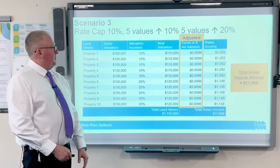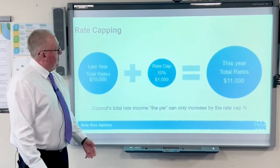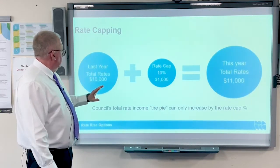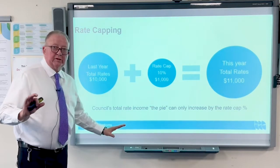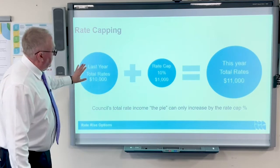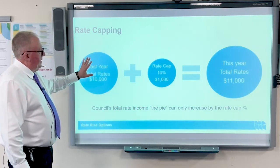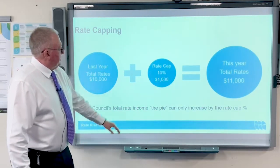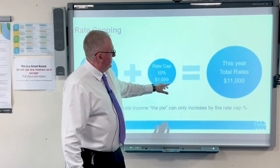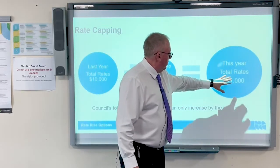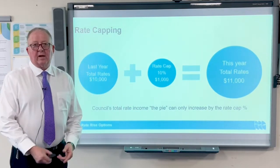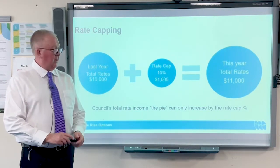To reiterate the rate capping regime — we talk about a rates pie. In this example the rates pie was $10,000. If there's a 10% rate cap increase, it goes up by $1,000, so the new rates pie will be $11,000, and then we distribute that out amongst the ratepayers. Thank you.